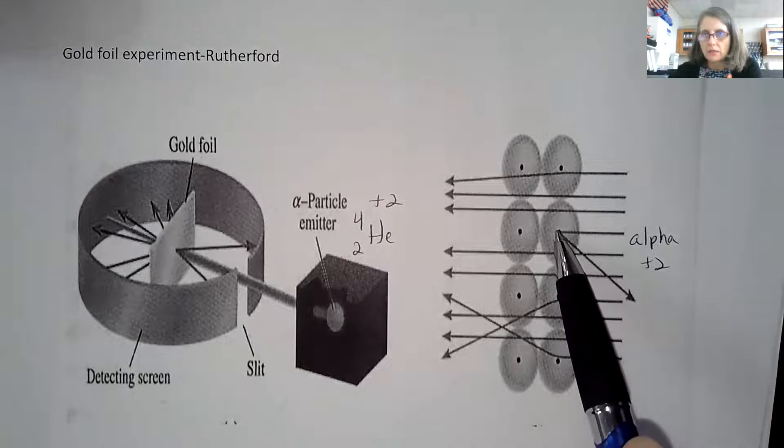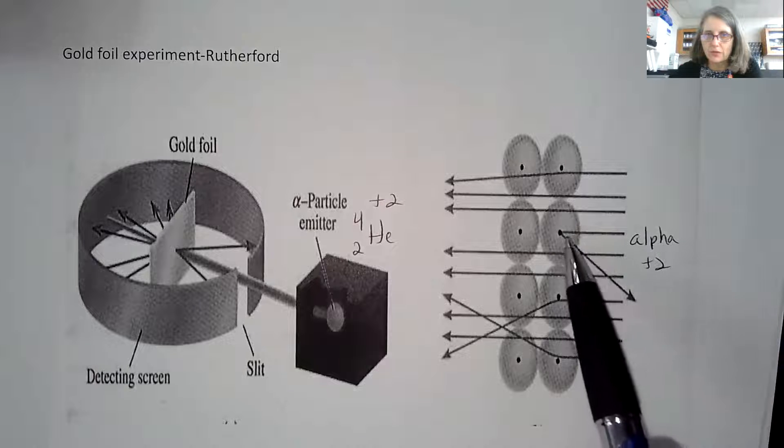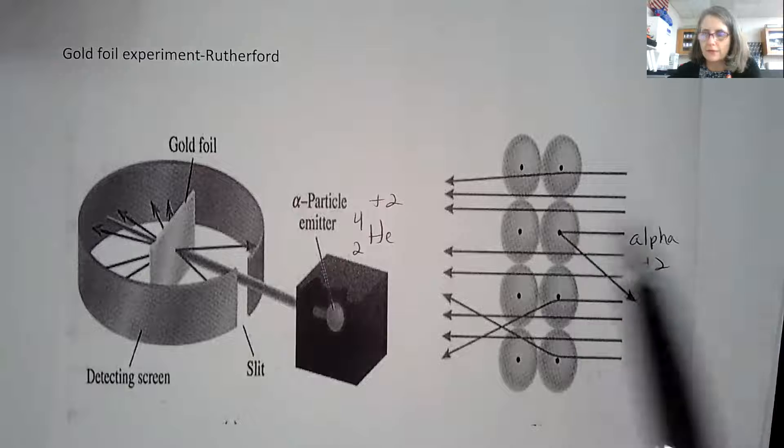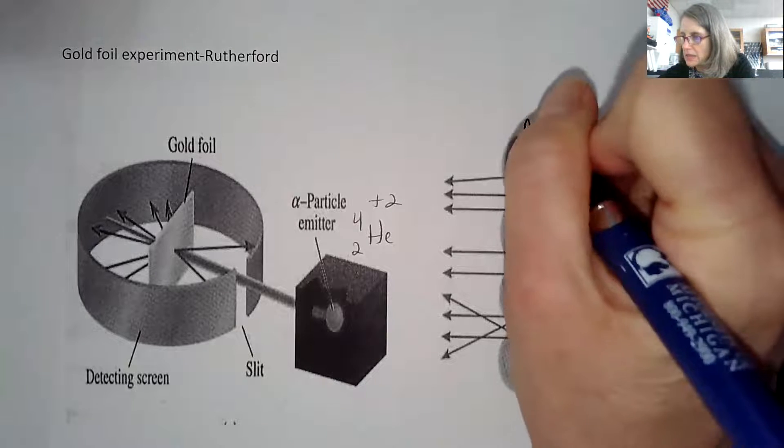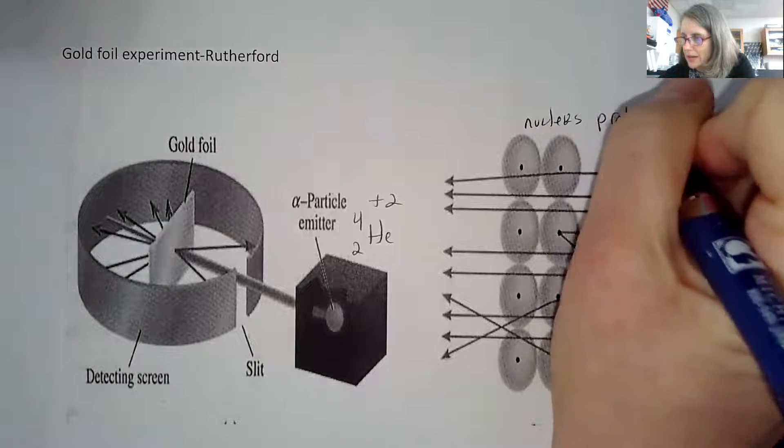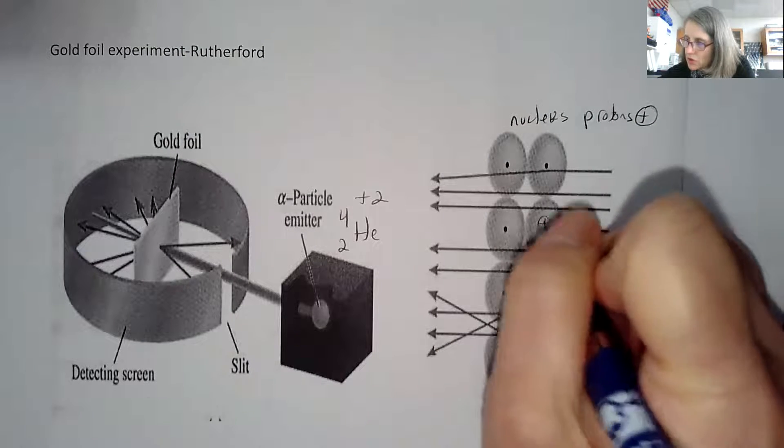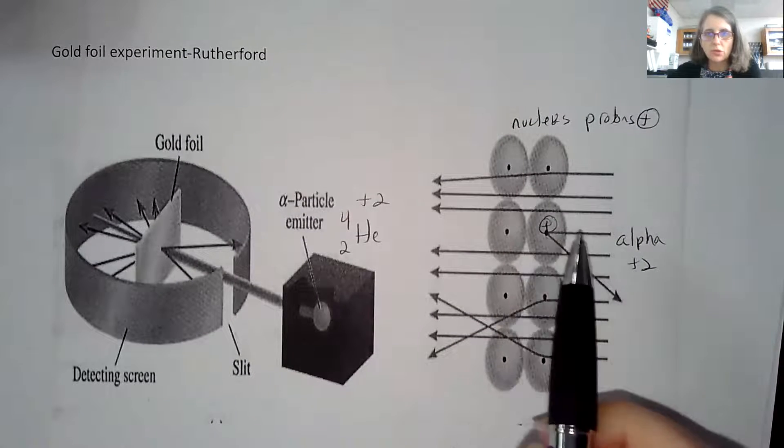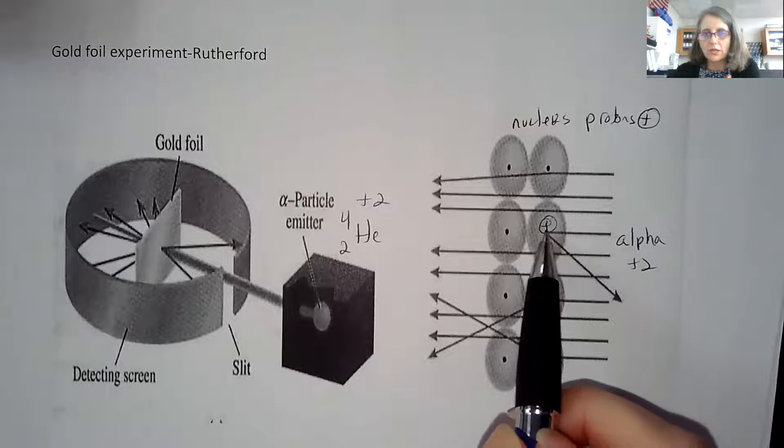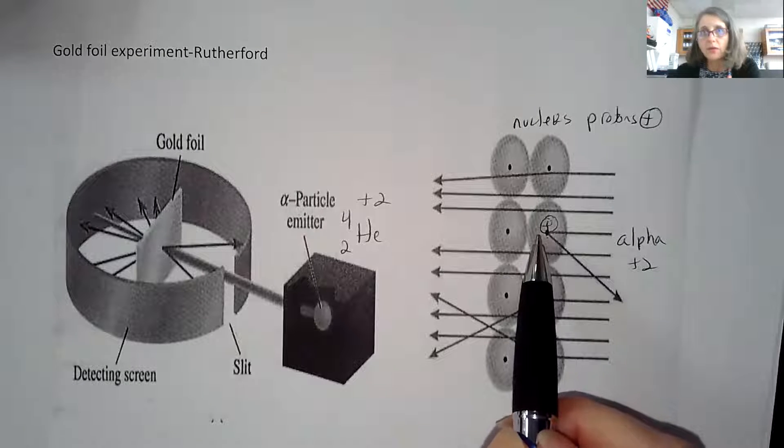The reason for the deflection that they found out after this experiment was that the nucleus itself, because the nucleus is made up of protons which are positive, if this is a positive charge right here in this picture, if I have another positive charge, it's going to deflect it because the positives don't like other positives.